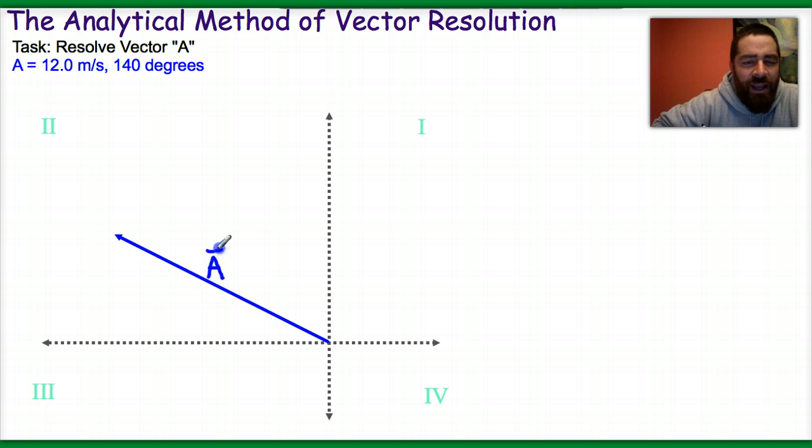So vector A is 12 meters per second at 45 degrees. Then what I'm going to do is drop some construction lines from the end of the vector.